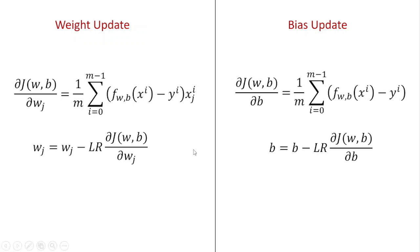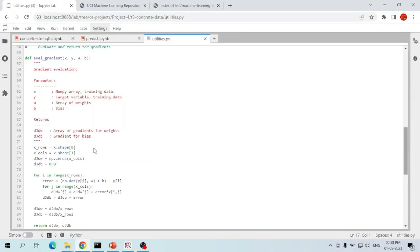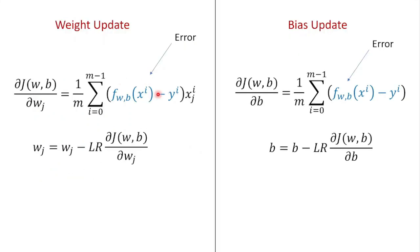Similarly, we multiply the gradient of the bias with the learning rate and subtract from the existing bias value, giving us the new bias value to use in the upcoming iteration. In this program we evaluate the gradients of weights and biases — first we evaluate the error, which represents the common part shared by both equations.